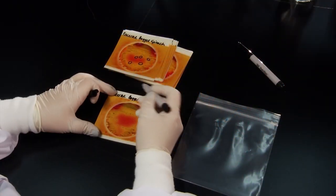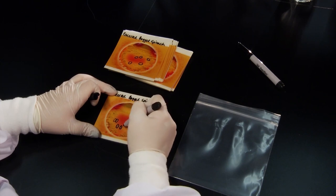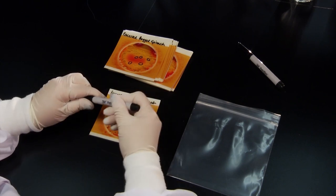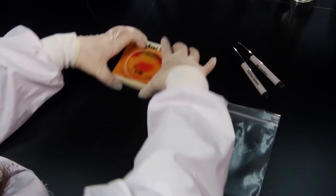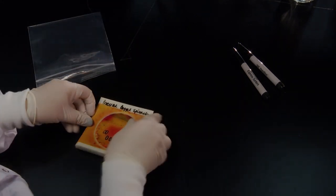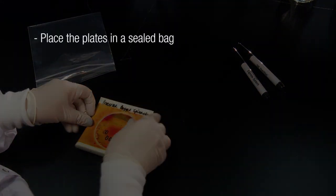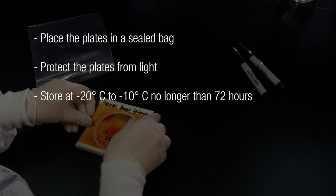Finally, if the 3M PetriFilm Salmonella Express plates cannot be analyzed within one hour of removal from the incubator, circle the presumptive Salmonella colonies on the top film with a permanent ultra-fine tip marker. Place the plates in a sealed plastic bag. Make sure to protect the 3M PetriFilm Salmonella Express plates from light and store the plates at negative 20 to negative 10 degrees Celsius for no longer than 72 hours.